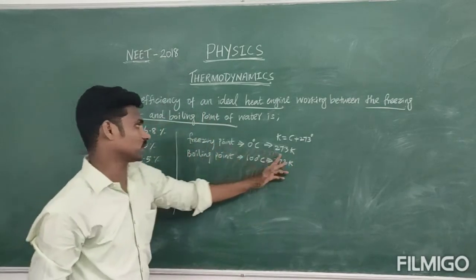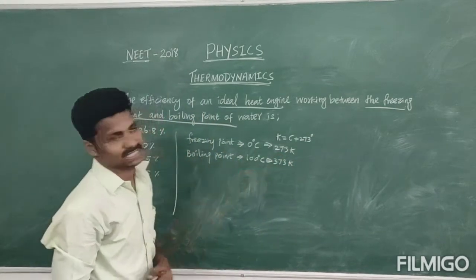So, now freezing point is 273 Kelvin, boiling point is 373 Kelvin.